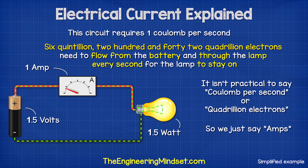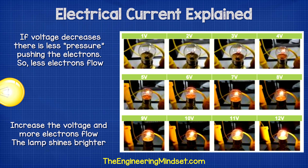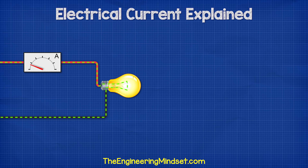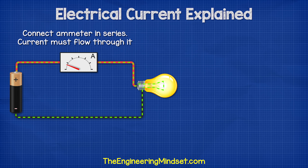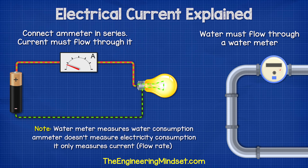The brightness of the lamp will vary with voltage. As we decrease the voltage, there is less pressure pushing the electrons, so less electrons flow. As we increase the voltage, more electrons flow and the lamp shines brighter. But don't forget, at a certain voltage and current, the lamp will burn out. To measure the current in a circuit, we need to connect an ammeter in series so that the current flows through it. Think of it like a water meter — the water in a pipe needs to flow through the water meter for us to know how much water is flowing. Likewise, we need the electrons to flow through our ammeter.